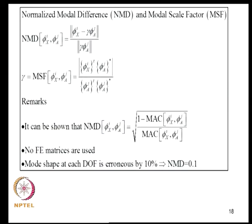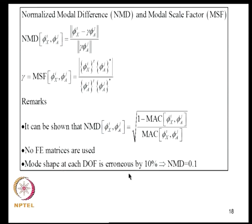There is also the normalized modal difference (NMD) and modal scale factor. The NMD between mode shapes phi_Xi and phi_Aj is the L2 norm of (phi_Xi minus gamma phi_Aj) divided by the L2 norm of gamma phi_Aj, where gamma is the modal scale factor defined in a specific way. We can show that NMD is related to MAC through a derived equation. No FE matrices are used here, but if mode shape at each DOF is erroneous by 10%, NMD becomes 0.1, giving a more direct measure of error.